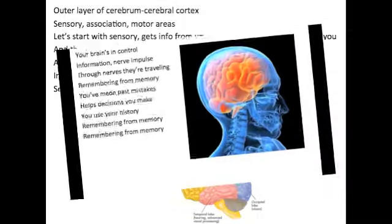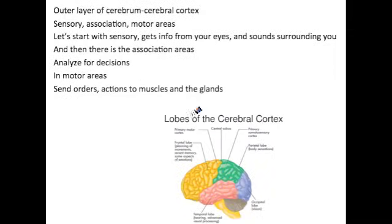Out of layers of cerebral — cerebral cortex. Sensory, association, motor areas. Let's start with sensory — get signals from your eyes and sounds surrounding you. And then there are the association areas. And there are four decisions in motor areas: sensors, actions, two muscles and the gland.